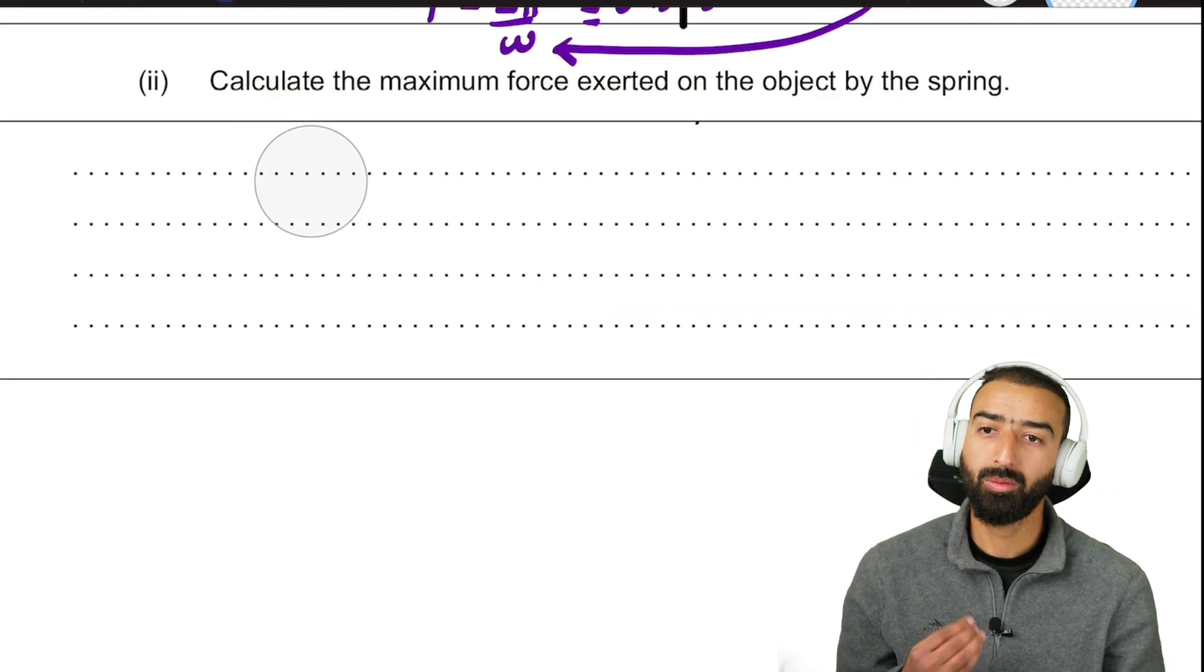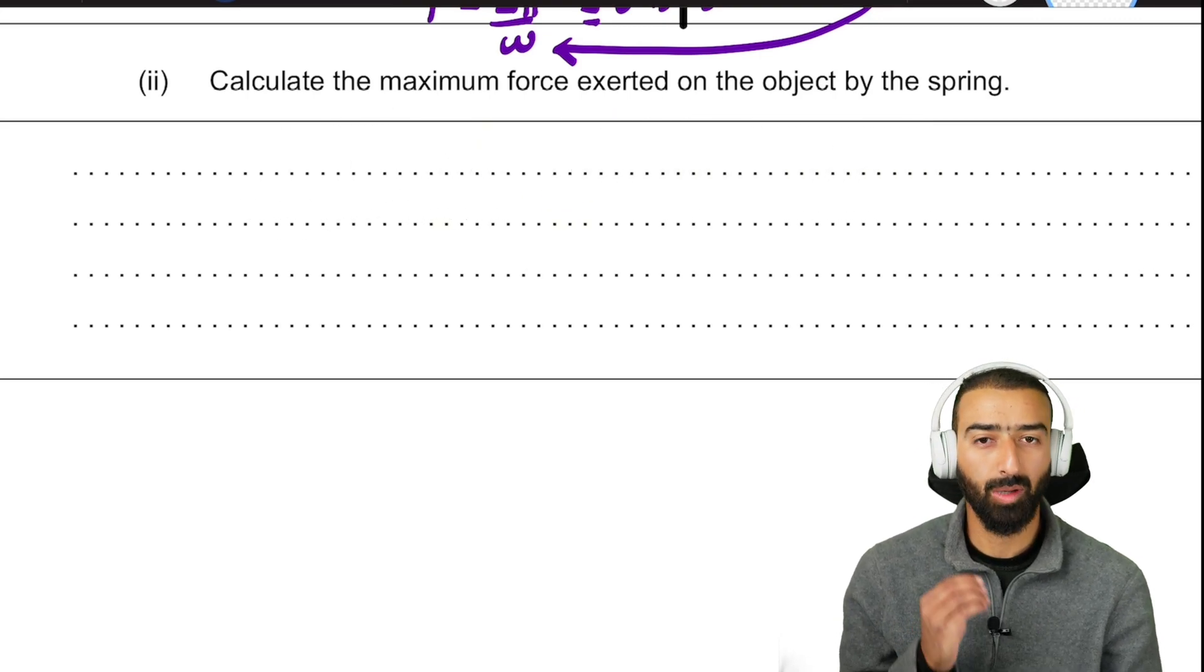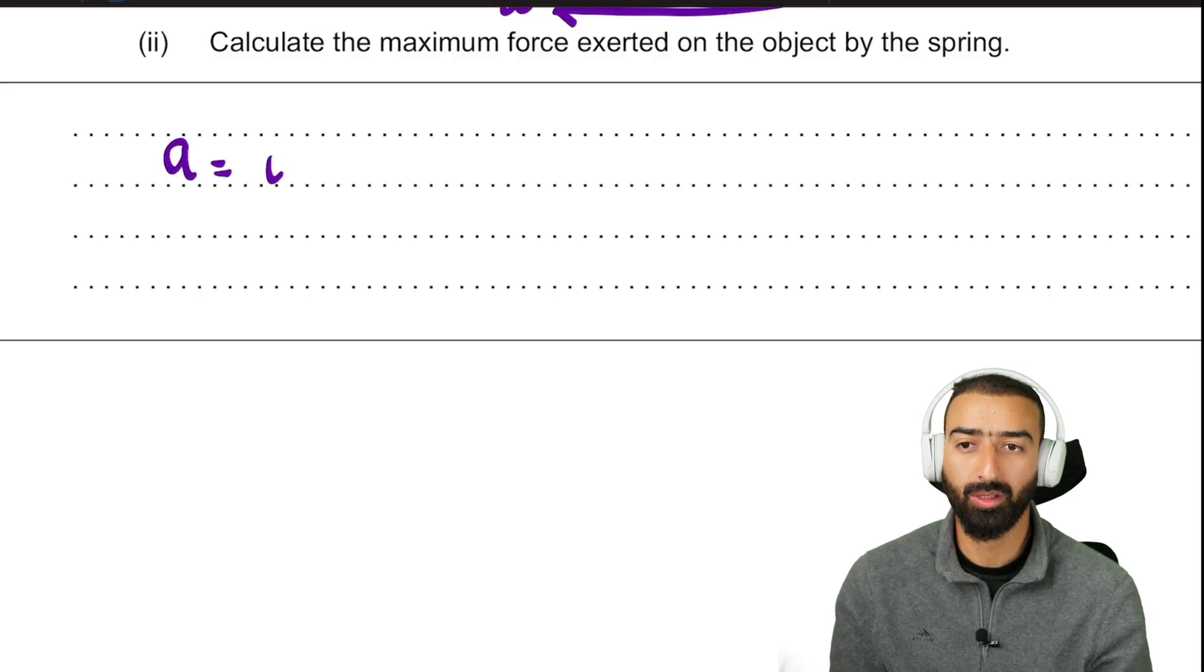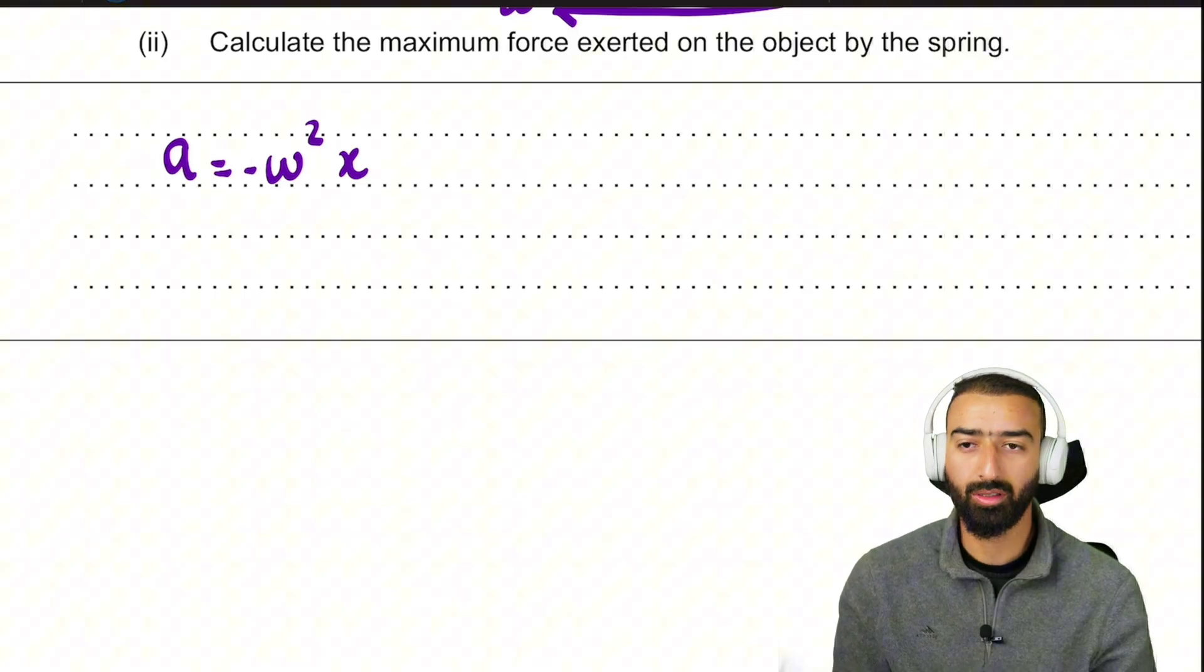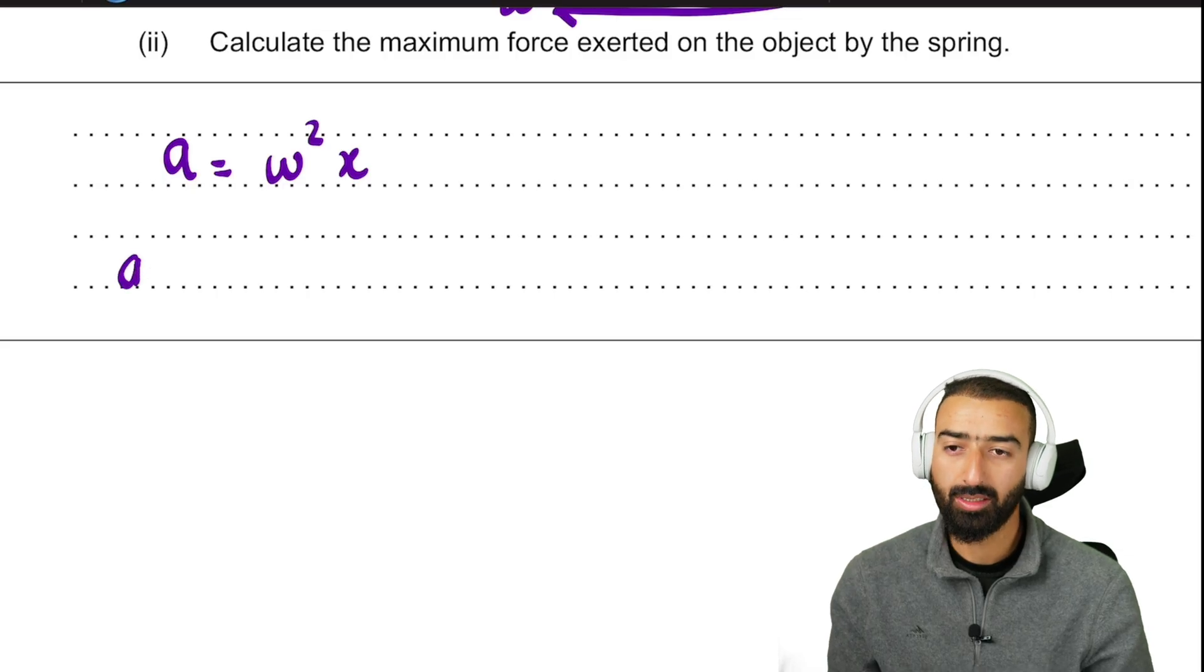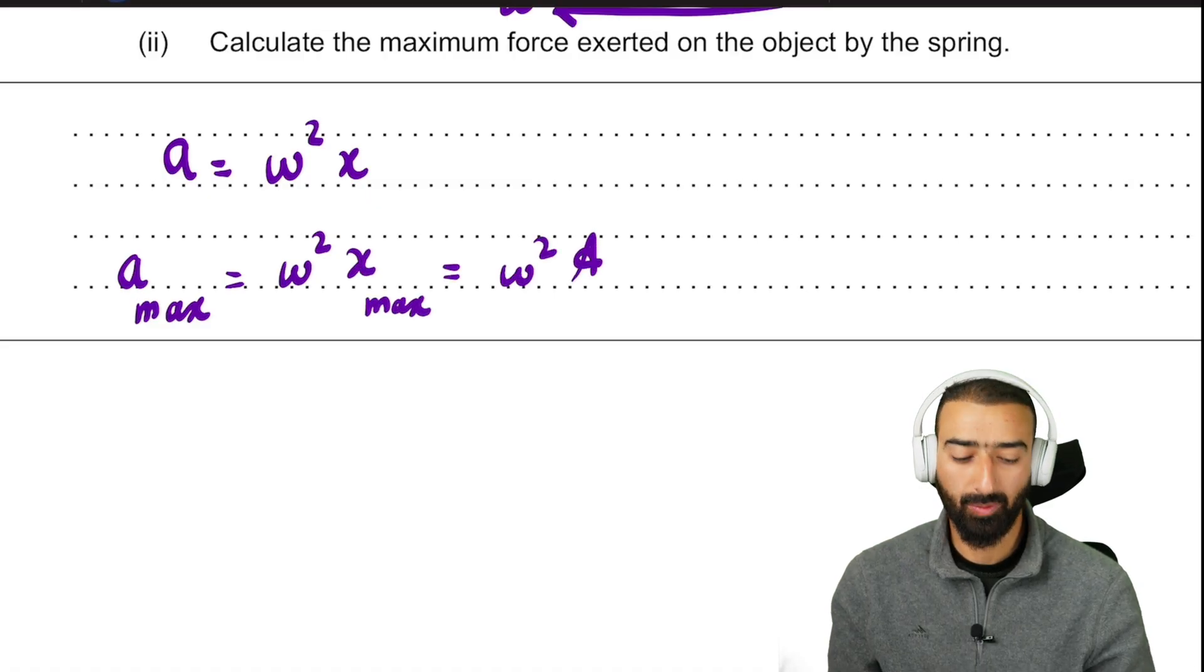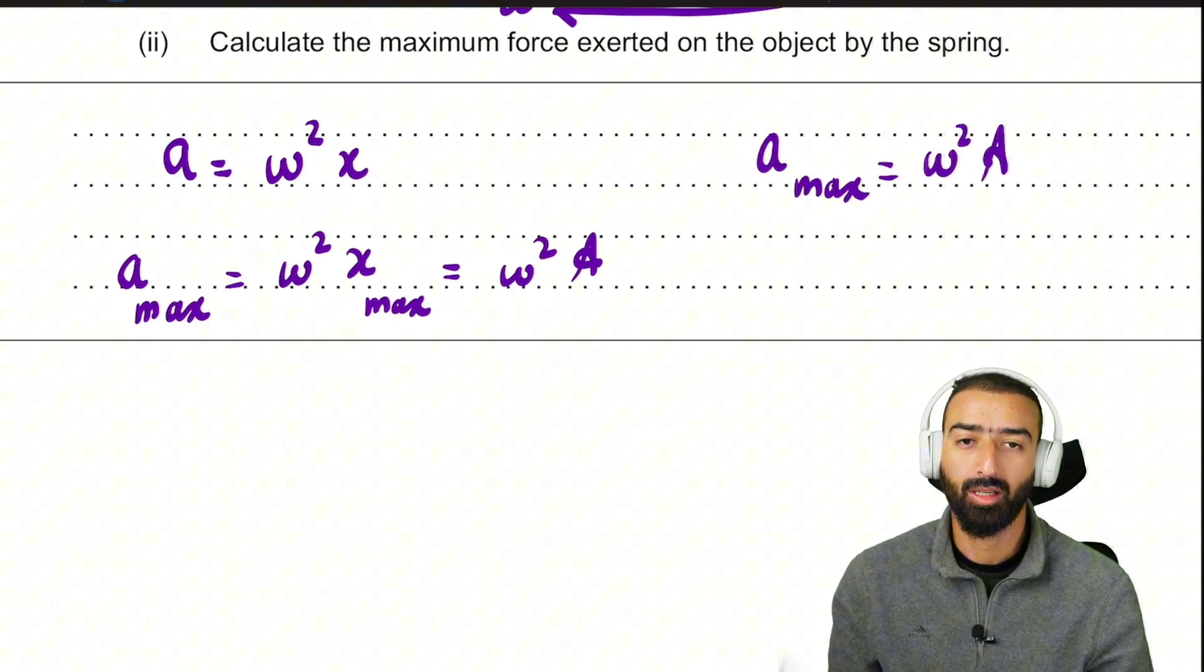The final part of the problem asks us to calculate the maximum force exerted on the object by the spring. You'll find in your data sheet an equation that says the amount of acceleration equals omega square x. You'll find a minus in front, but we are going to neglect that because we are looking at the magnitude. That means the maximum acceleration would be omega square maximum displacement.